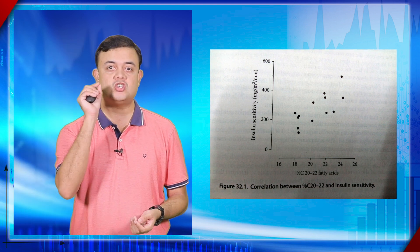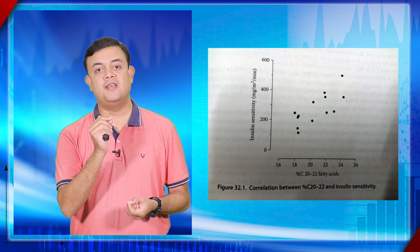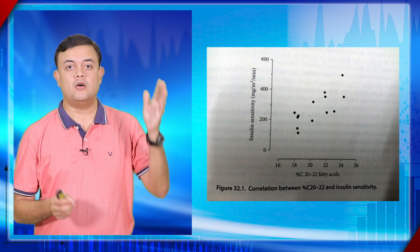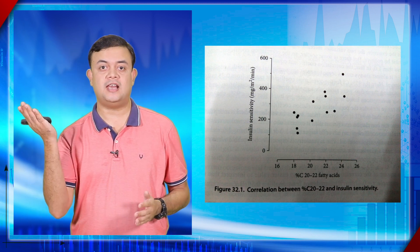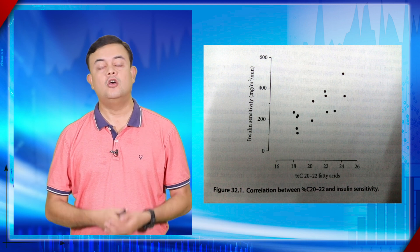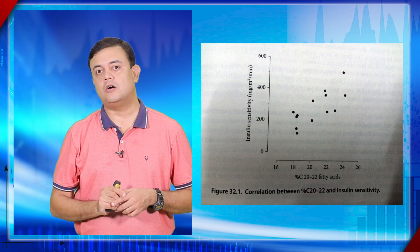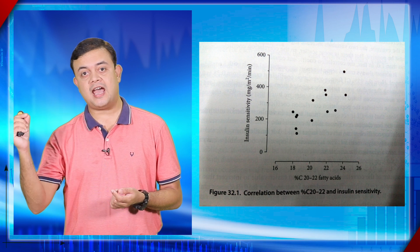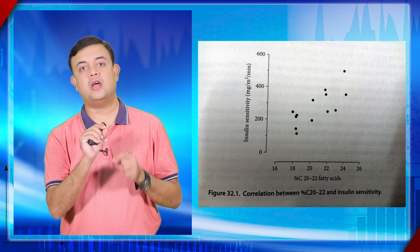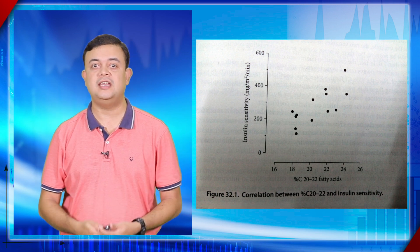Before attempting a correlation, plot an XY scatter plot. Each dot represents one individual's lipid level versus insulin sensitivity. It is immaterial which variable goes on which axis. If the arrangement of dots looks roughly linear, you can say there is a positive correlation — as x increases, y also increases, or as x decreases, y decreases. Both positive and negative slopes represent linear correlation.